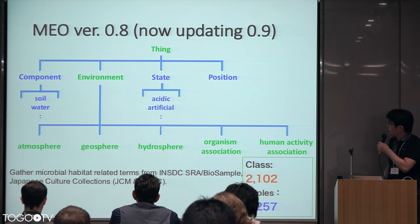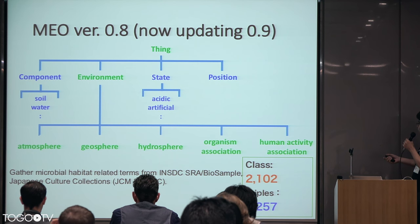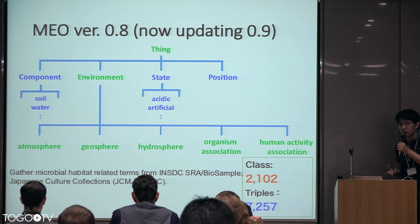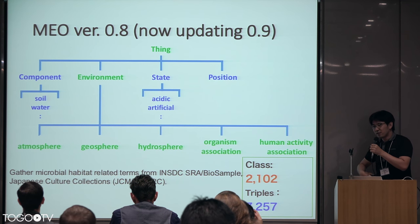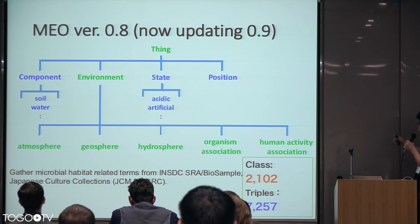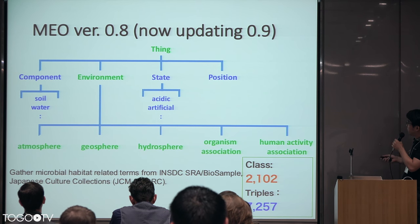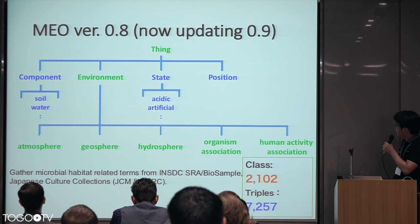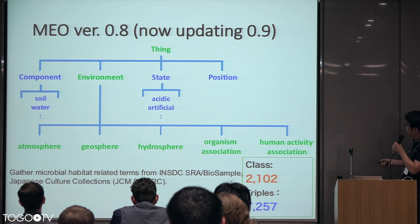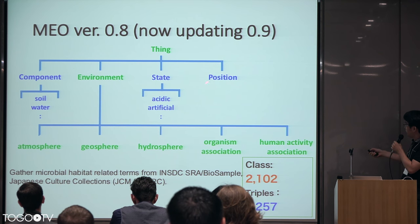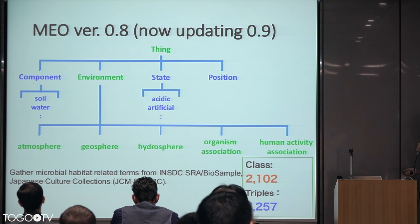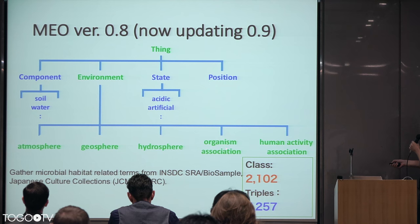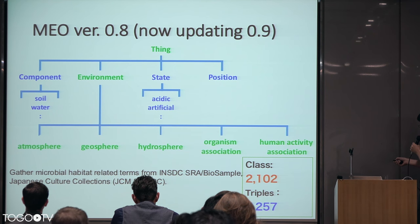MEL is now at version 0.8. It describes the microbial environment, which is sometimes different from our own environment. For example, the human intestine is our organ, but for microbes it is their environment — so semantically it is different. Therefore we developed MEL specifically for microbes, not for humans. It describes environments in us, on us, and also environmental components, states, and positions. The class count is now more than 2000, and the relationships between classes include not only hierarchical structure but also associations such as habitat associations and human activity associations.